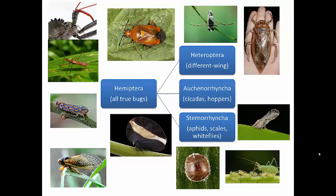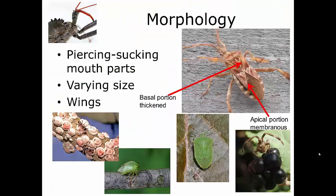For the purposes of this class, we're going to stick with this classification — it keeps things simple, and it's consistent with your book and the materials I've given you. We're going to focus on one sub-order in particular: the Heteroptera — those that actually affect animals.